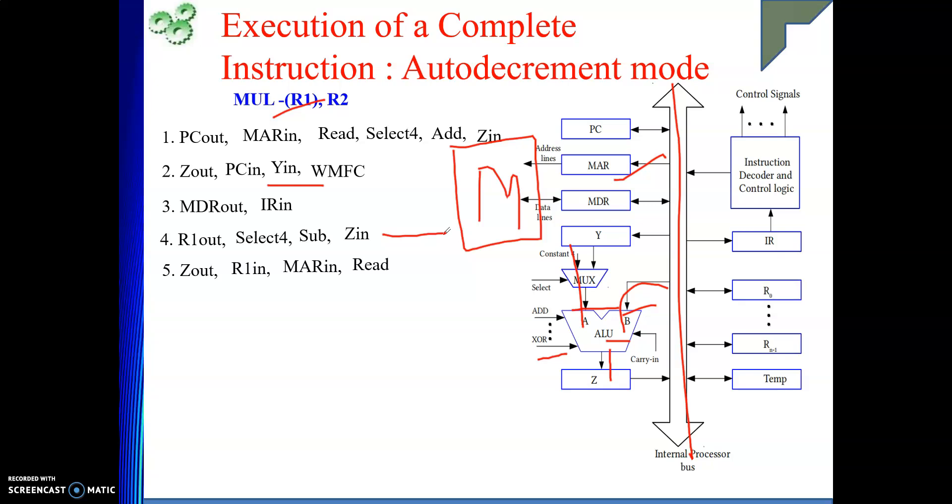Now, what I will do? Read signal. Because I need to get the data from memory. Read. Can I do anything more here? No. Because 2 outs are not possible. WMFC in the same step is not possible. Step number 6. R2 out. I will make it available in the Y register. And then we will wait for data to come from memory. It is WMFC.